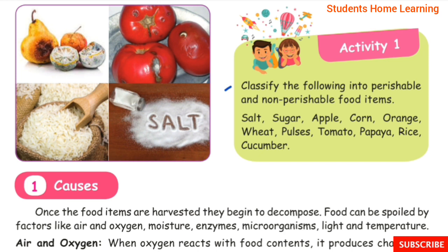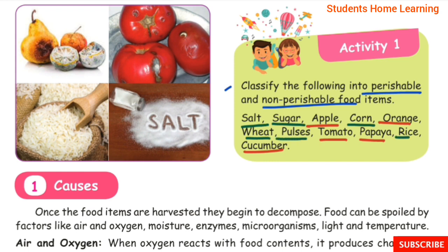Activity 1: Classify the following into perishable and non-perishable food items. Perishable items: Apple, Orange, Tomato, Papaya, Cucumber. Non-perishable items: Salt, Sugar, Corn, Wheat, Pulses, Rice.